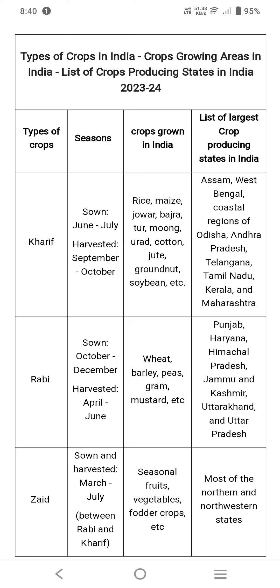Rabi season crops are majorly grown in the states of Punjab, Haryana, Himachal Pradesh, Jammu & Kashmir, Uttarakhand, and Uttar Pradesh. In Zaid season, seasonal fruits, vegetables, and fodder crops are grown, generally during the summer season.